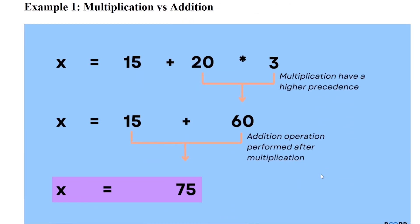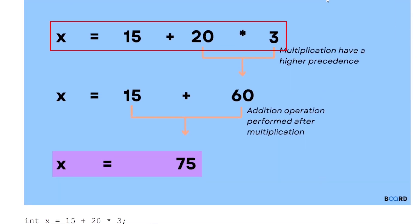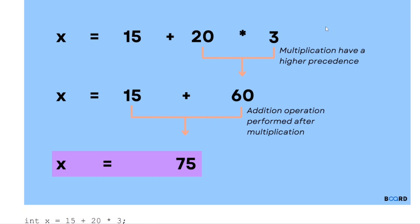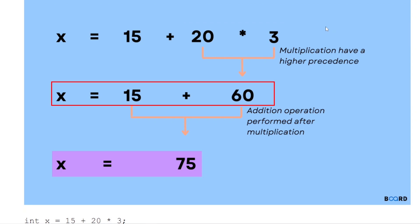Consider the expression: x = 15 + 20 * 3. According to the precedence table, multiplication has higher precedence than addition, so multiplication is performed first. That is 20 * 3, which equals 60.